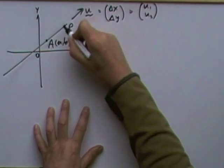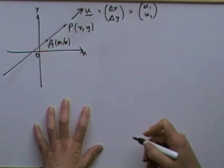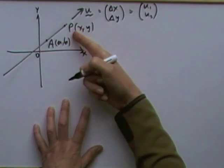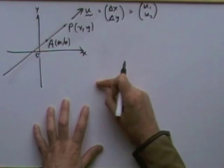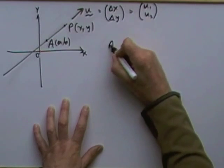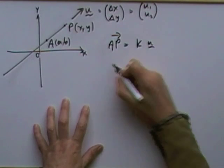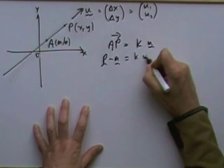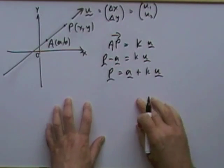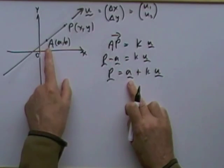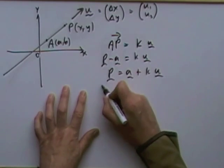To get to any general point P (x, y) on the line, there are two ways of looking at it. Either: start at point A and take steps in direction u, or note that the vector AP must be a multiple of u since it goes in the same direction. So P minus A equals k times u, or P equals A plus ku. That's the vector equation of the line.